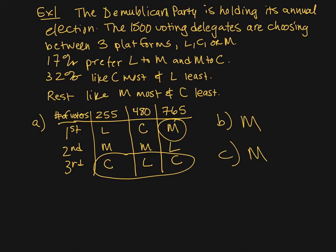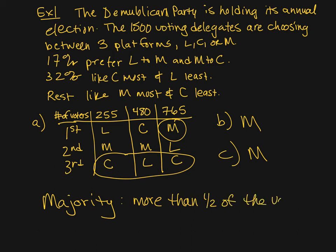In fact, M not only has the most first place votes, it has the majority. The majority is defined as more than half of the votes. If half works out to be exactly a number, it's half plus one — but it's more than half of the votes. So M has the majority here.